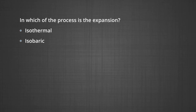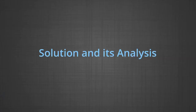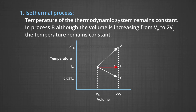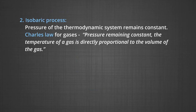In the first case, the isothermal process: the temperature of the thermodynamic system remains constant. In process B, although the volume increases from V₀ to 2V₀, the temperature remains constant. Hence the answer will be process B.